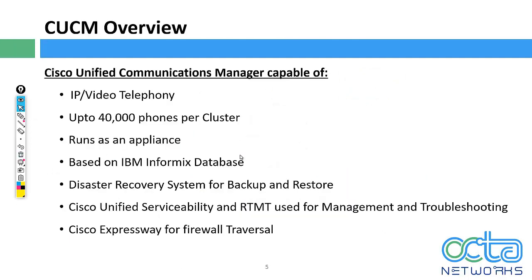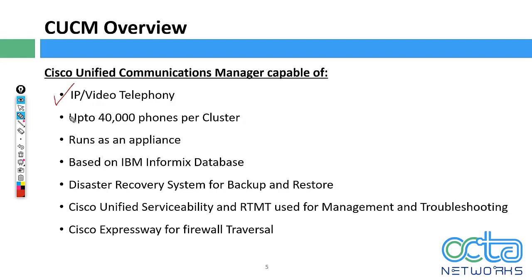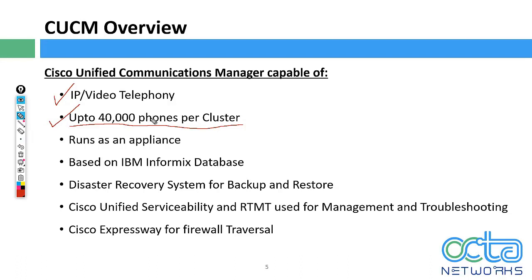Cisco Unified Communication Manager is the flagship product of Cisco and one of the top products in IP telephony, supporting IP and video telephony. It can support up to 40,000 phones per cluster. A cluster means that the first server you install is the Publisher, and as you start installing Subscribers they form a cluster together. In short, a cluster is a group of servers - Publisher and Subscribers.